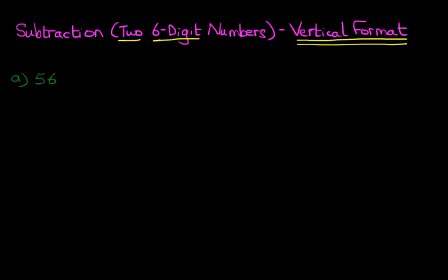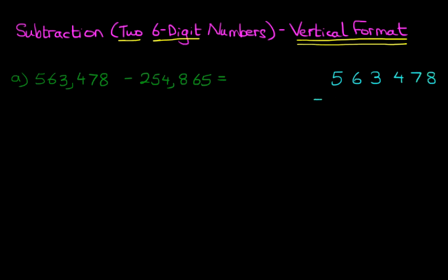What is five hundred and sixty-three thousand four hundred and seventy-eight minus two hundred and fifty-four thousand eight hundred and sixty-five? The first step is to rewrite the question in nice neat columns. So let's do that: 563,478 minus 254,865. The key is to write it in nice neat columns.